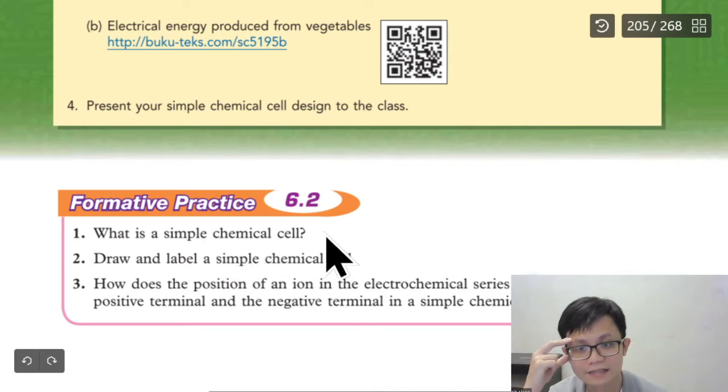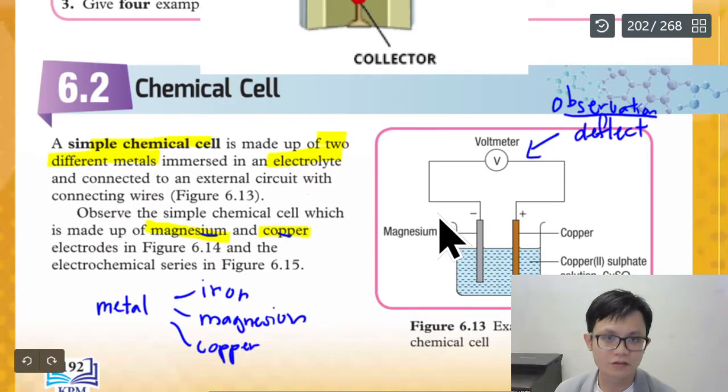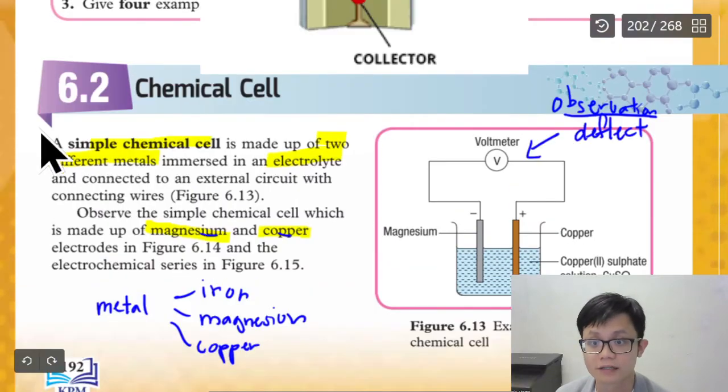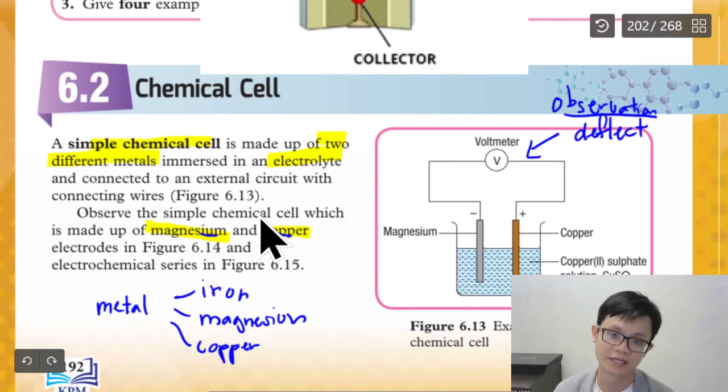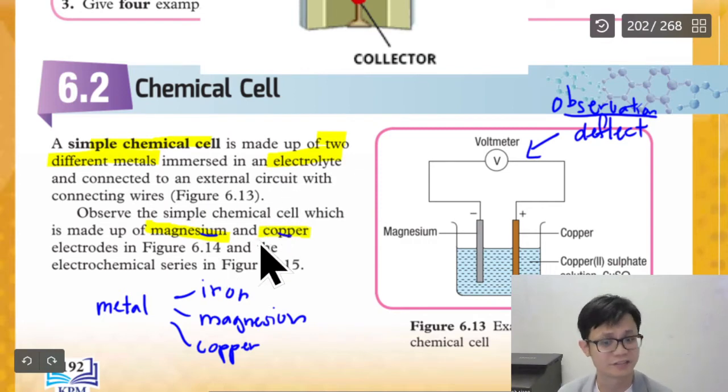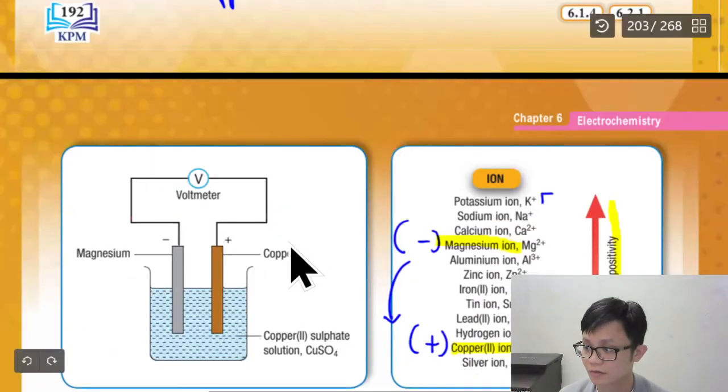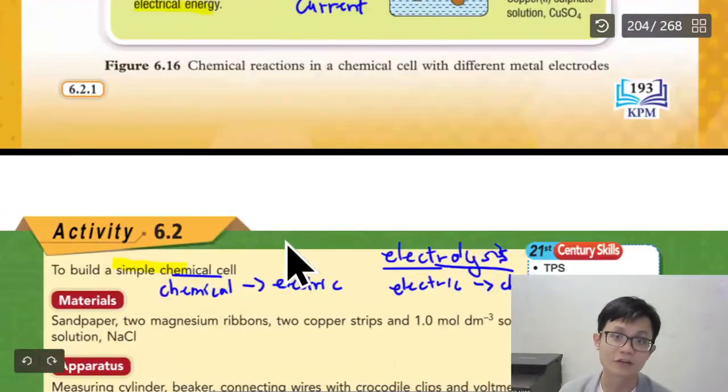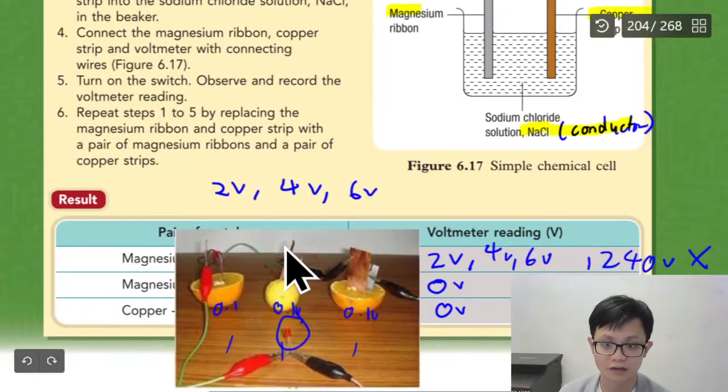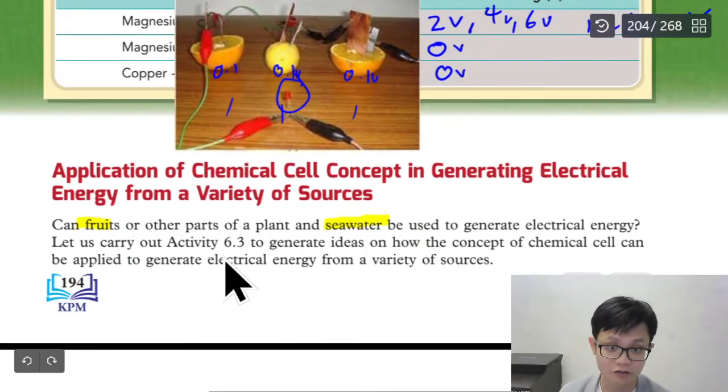What is a simple chemical cell? The answer is at page 192. A simple cell is made up of two different metal, immersed into electrolyte and connected to the circuit of connecting wire. The important point: two different metal, immersed into an electrolyte. That is the keyword to produce electric properly.